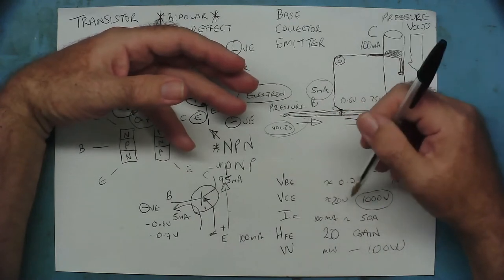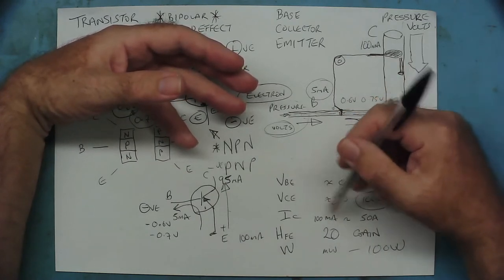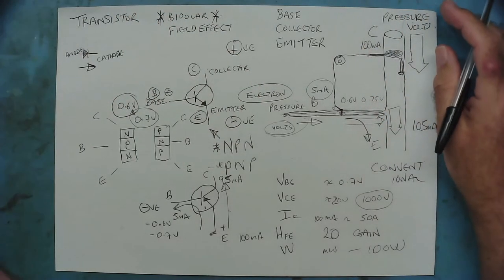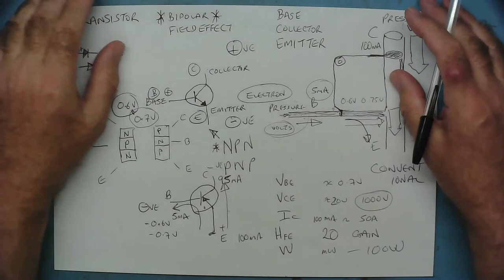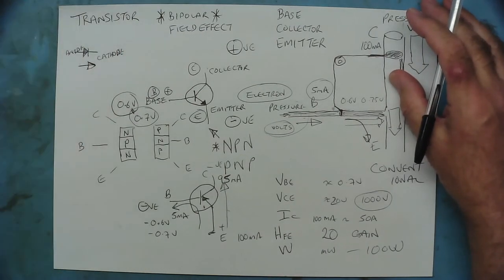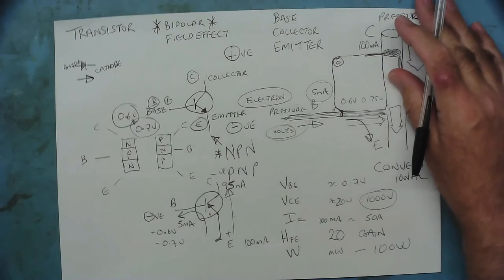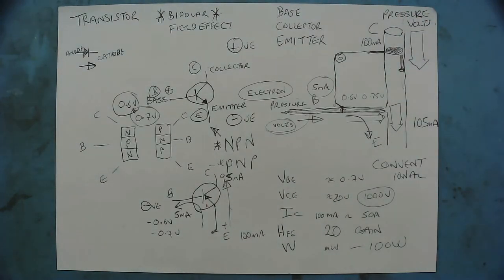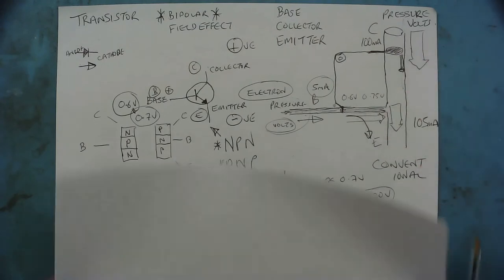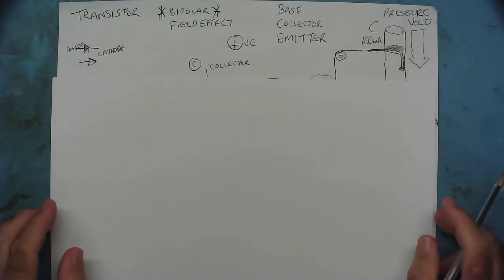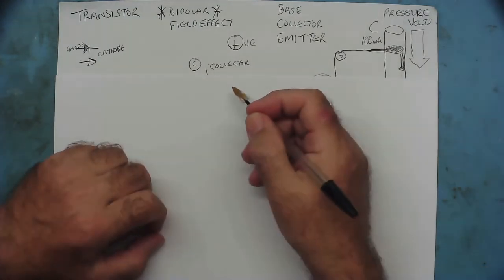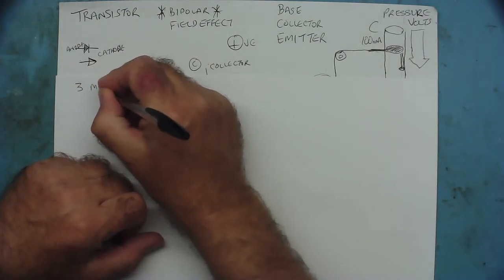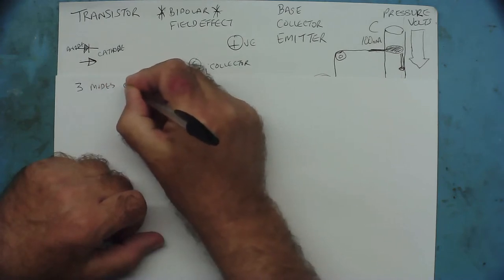This includes the maximum collector voltage, the maximum current through the collector, the gain, the wattage, and so on. So, now we know what a transistor basically does, I think it's a good time to have a look to see how they're used in real circuits. The first thing we want to consider with a transistor is the fact it has three modes of operation.